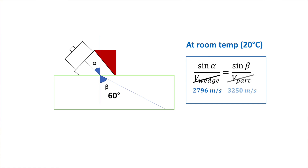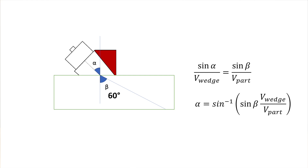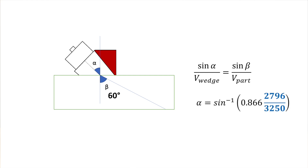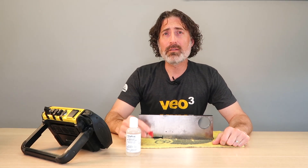The velocity of shear waves in steel is 3250. To solve for the angle of incidence of this wedge, we isolate alpha on the left-hand side, plug in those values for the velocities, and since the sine of 60 degrees is 0.866, alpha works out to be 48 degrees. We're going to take that cut angle of 48 degrees and use it to theoretically solve for the angle of refraction when we change temperature.